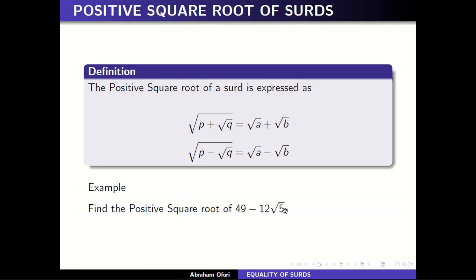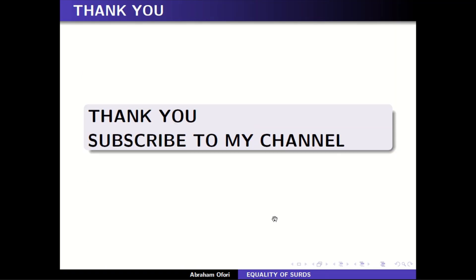Example: find the positive square root of 49 minus 12 square root of 5. In solving this, this would be of the form square root of a minus square root of b. We'll solve this in our next video using simultaneous equations, substitution, and change of subject — so watch out for the next video. Thank you, and please subscribe to my channel.